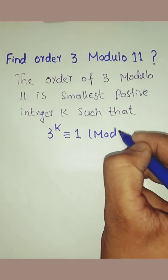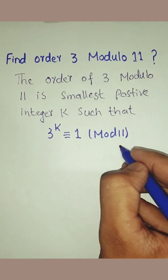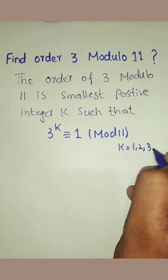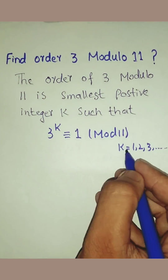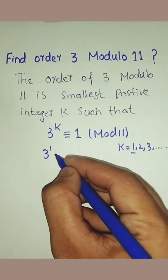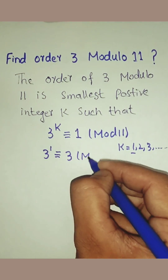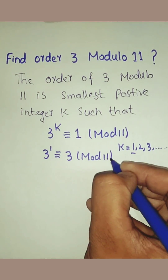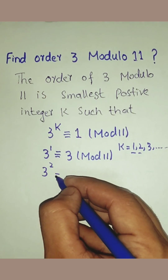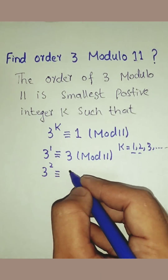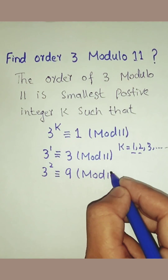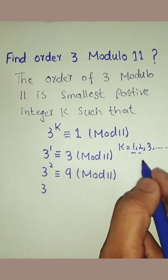First, 3 to the power 1 is equal to 3 mod 11. Next, 3 to the power 2 is equal to 9 mod 11.